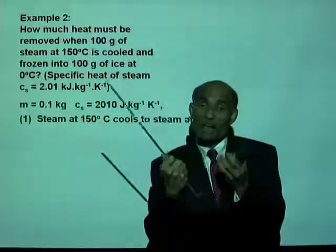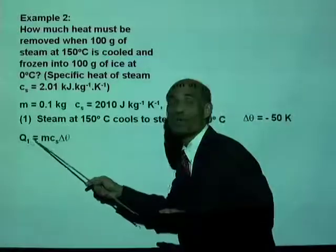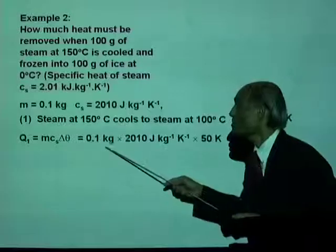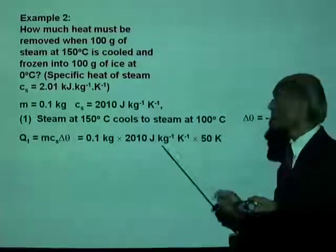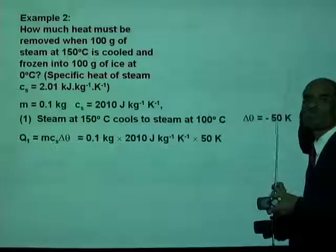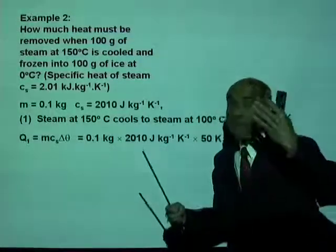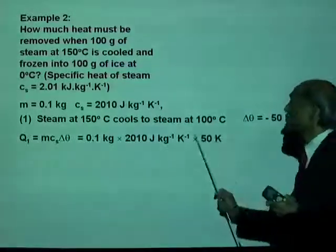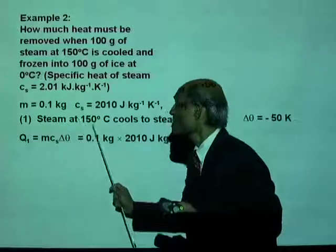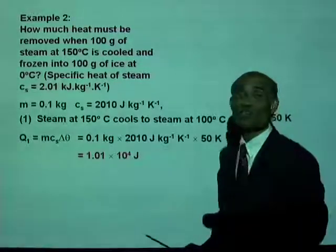The amount of heat liberated during that stage: Q1 equals mass times specific heat of steam times the change in temperature. Mass is 0.1 kilogram, specific heat is 2,010 joules per kilogram per Kelvin, and the change in temperature is 50 Kelvin. The negative sign tells you heat is liberated, but we use the positive value. Q1 equals 1.01 times 10 to the 4 joules.